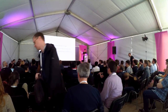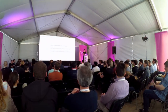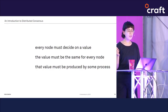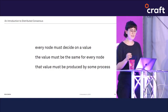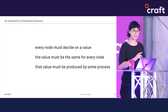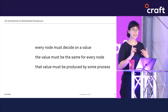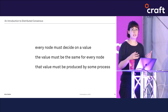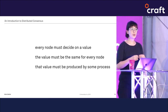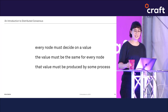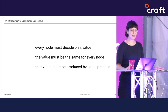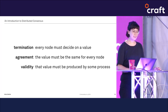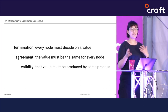Let's look first at a strong or strict formulation of the consensus problem, since any solution for a stronger problem should also solve weaker problems. In this strict world, every node must eventually decide on a value, that value has to be the same across every node, and that value has to have been produced by some process. These three properties have formal names: termination, agreement, and validity.